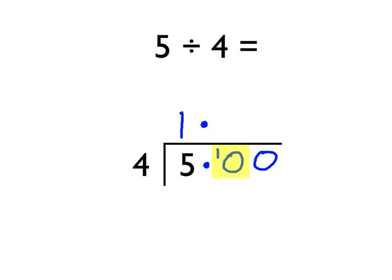How many times does 4 go into 10? Well, it goes in twice to make 8, with 2 remainder. That 2 remainder gets put up here to turn this number into 20. So then we ask ourselves: how many times does that 4 go into 20? Well, it goes in 5 times — no remainder. And so our answer is 1.25.